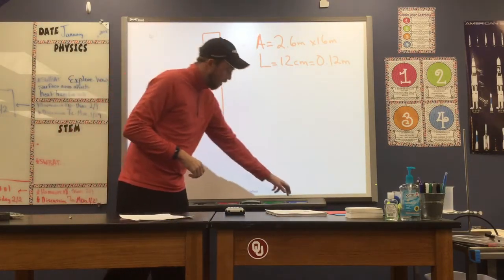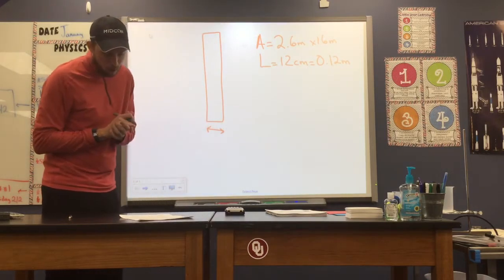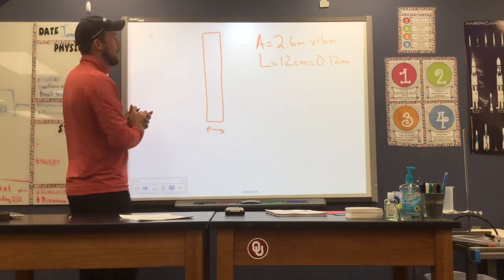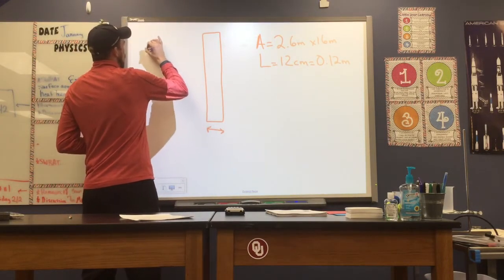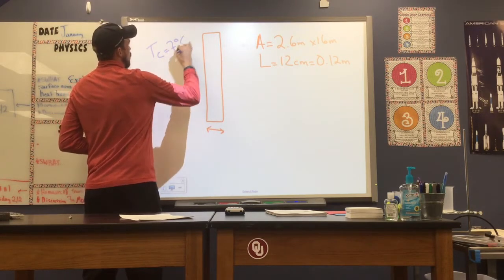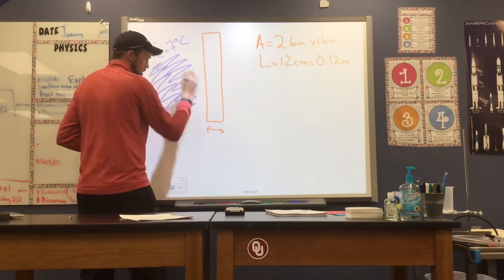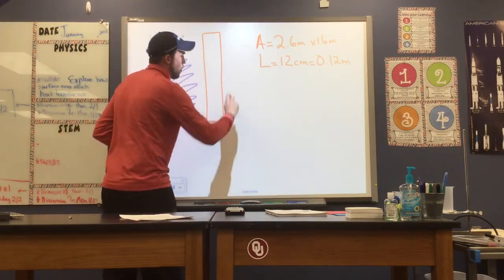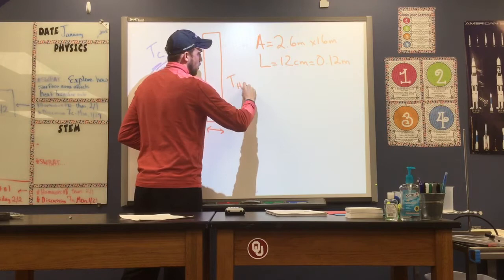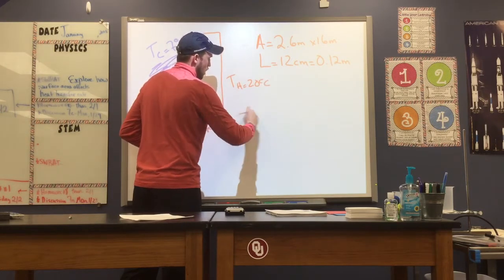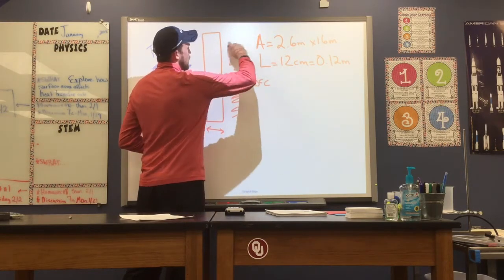Now we're told that we have the temperatures inside and outside of the wall are 20 degrees and 7 degrees. So say our cold temperature, 7 degrees Celsius. Let's say this is our outside. And then our hot temperature, T hot, is 20 degrees Celsius. And that is, say, inside.